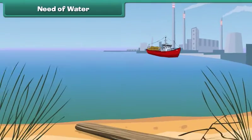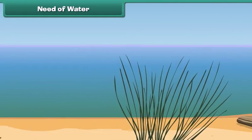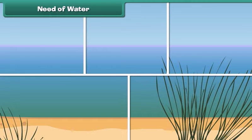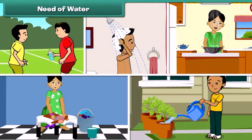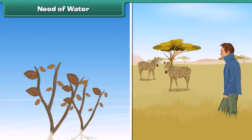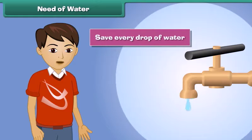We know air is very essential for our life, but did you ever wonder why water is so important? We need water to drink, to bathe, to cook, to wash our clothes, to water plants and for so many other reasons. Without water the plants would die and people and animals would go thirsty. So children, save every drop of water and don't let it go to waste.